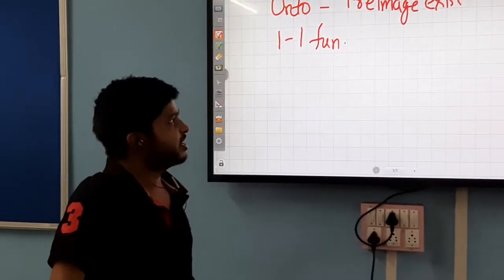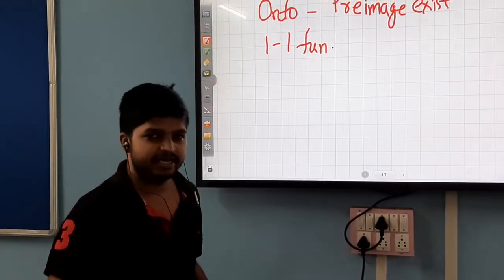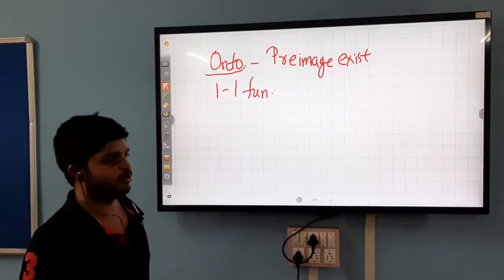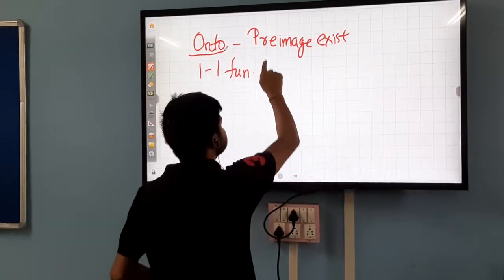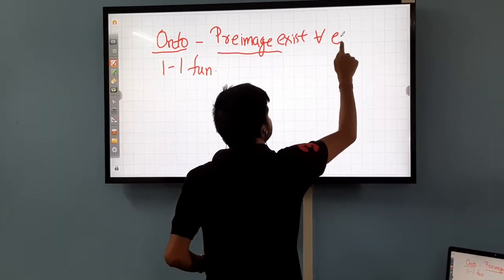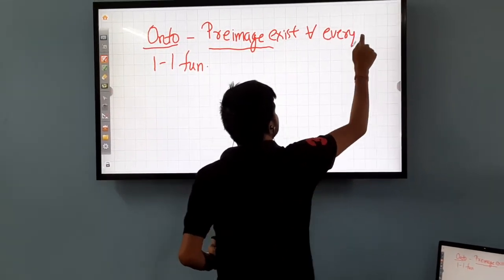How can we check the functions of one-to-one or onto? In the previous class, we studied about onto function. I have told that if the preimage exists for every element of codomain, then the function is called onto function.